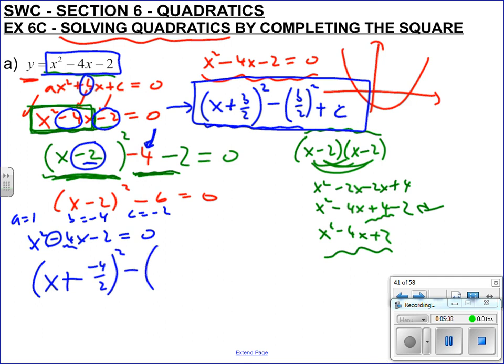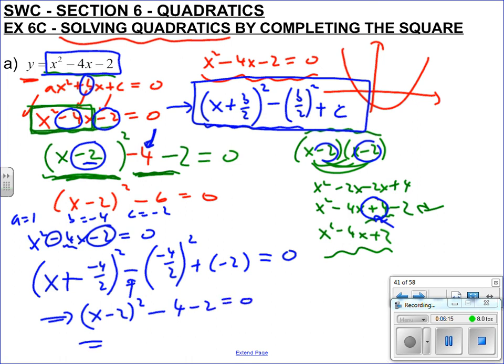Subtract big brackets minus 4 over 2. Lots of people get that wrong. It's always minus, isn't it? Because it's always taking away that extra element here. Minus times a minus always makes a plus, so we have to get rid of that. We have to get rid of that. Squared, plus c, so plus my minus 2, because here's my c here, equals 0. So I get x take 2 in the center squared, minus, minus 4 over 2 is minus 2 squared is 4, minus 2 is 0. So I do get x take 2 squared minus 6 is 0.